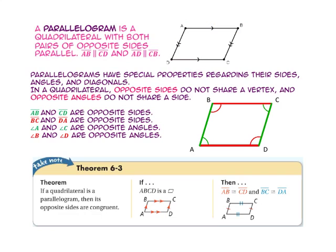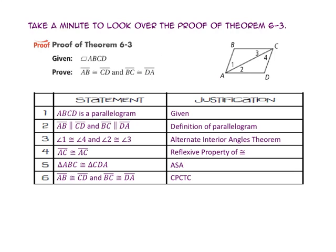Our first theorem for this lesson is Theorem 6-3. It states that if a quadrilateral is a parallelogram, then its opposite sides are congruent. Since quadrilateral ABCD is a parallelogram, side AB is congruent to side CD and side BC is congruent to side DA. Take a minute to look over the proof of Theorem 6-3, and if you have any questions, ask me tomorrow in class.